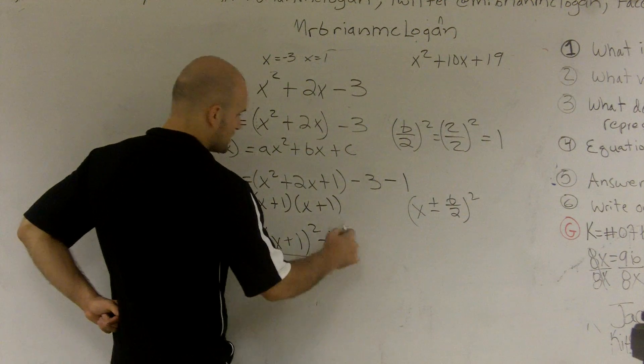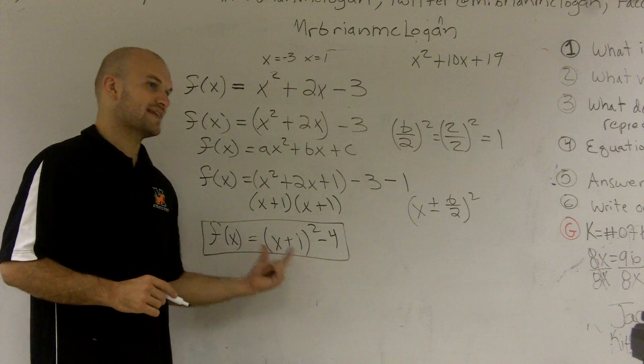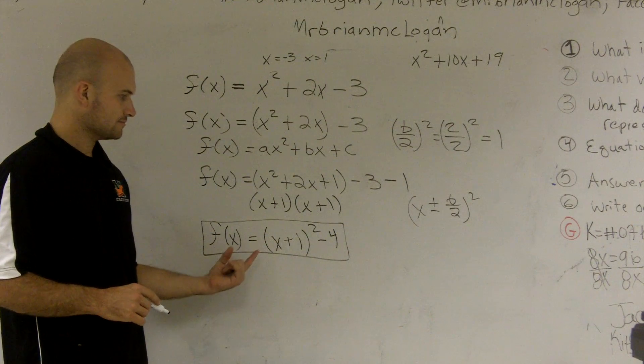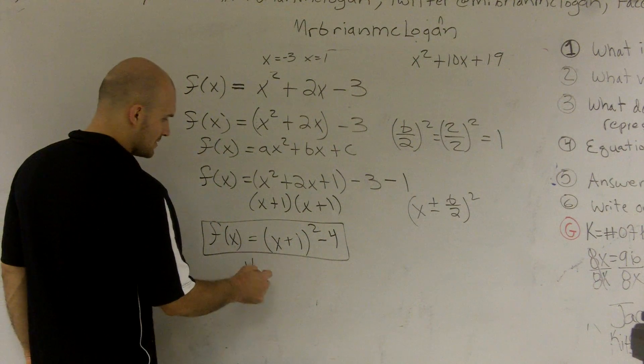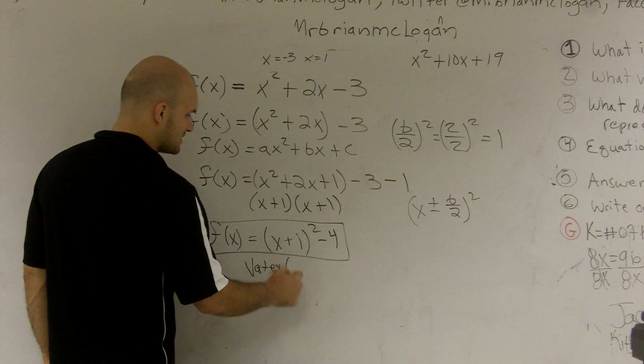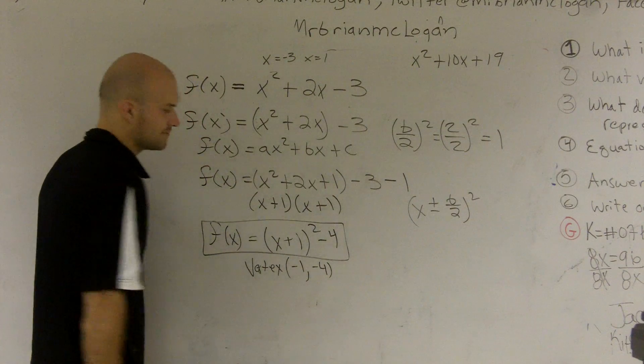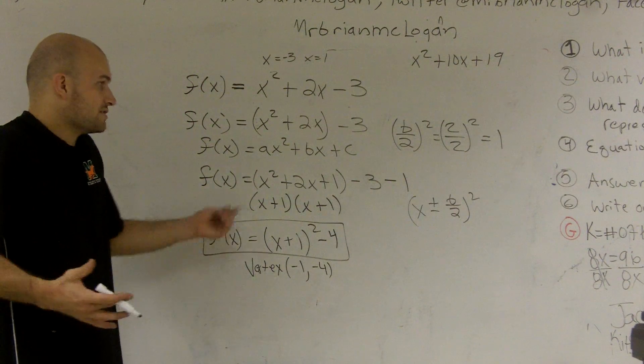And then negative 3 minus 1 is a negative 4. Now, what I have just done is completed the square. So now this is what we call in standard form. And if I wanted to find the vertex of this equation, it's so easy. The vertex is the opposite of inside your function, negative 1 and negative 4. So it's really easy to find the vertex.